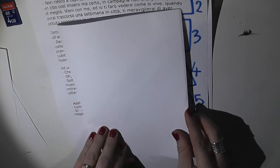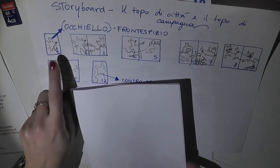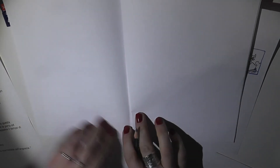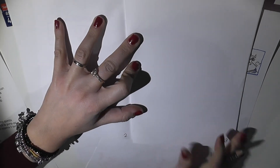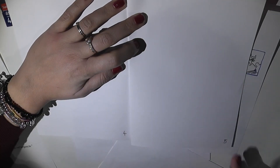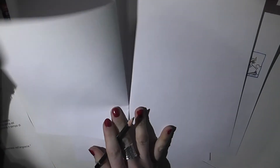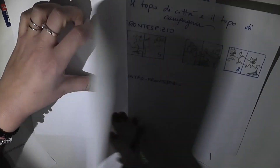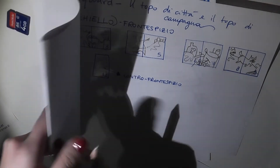Il menabò non è altro che il prototipo del vostro libro illustrato. Procedo quindi nel riportare più nel dettaglio tutto quello che ho previsto sinteticamente nello storyboard sulle pagine del mio menabò, che ho creato con semplicissimi fogli da stampa. Conto e piego il numero di fogli in modo tale che risultino uguali a quelli previsti nel mio storyboard. Prendo un ulteriore foglio e lo utilizzo come copertina.